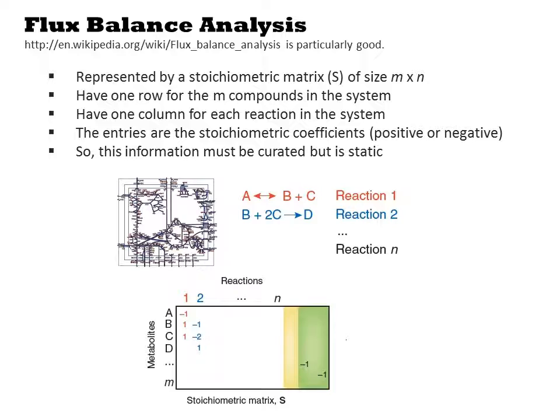In flux balance analysis, we represent the lump sum total of the cell's biochemical reactions by a stoichiometric matrix, called S, of size M by N. One row of the matrix has M compounds that exist in the system, and each column represents one reaction that occurs in that system.